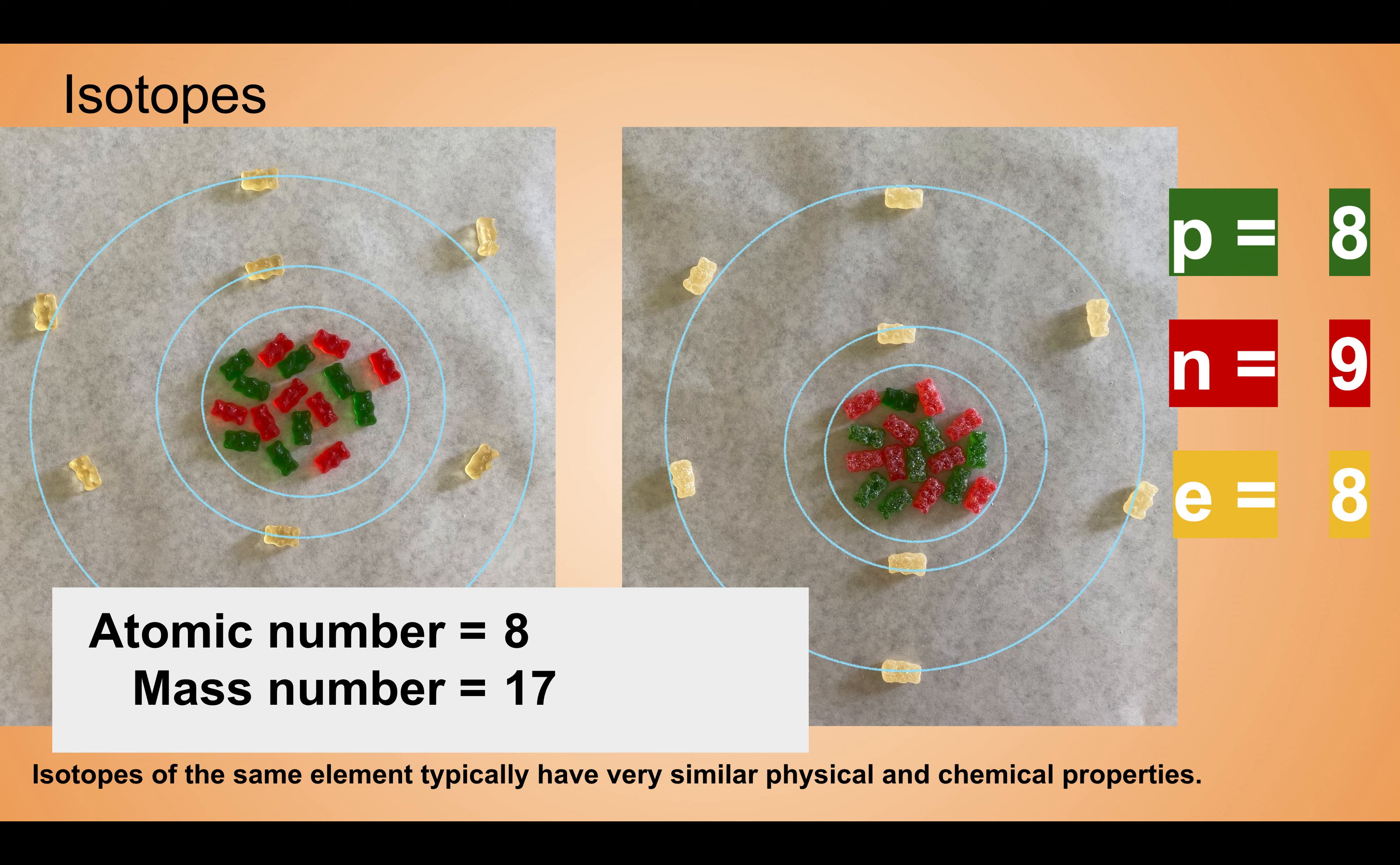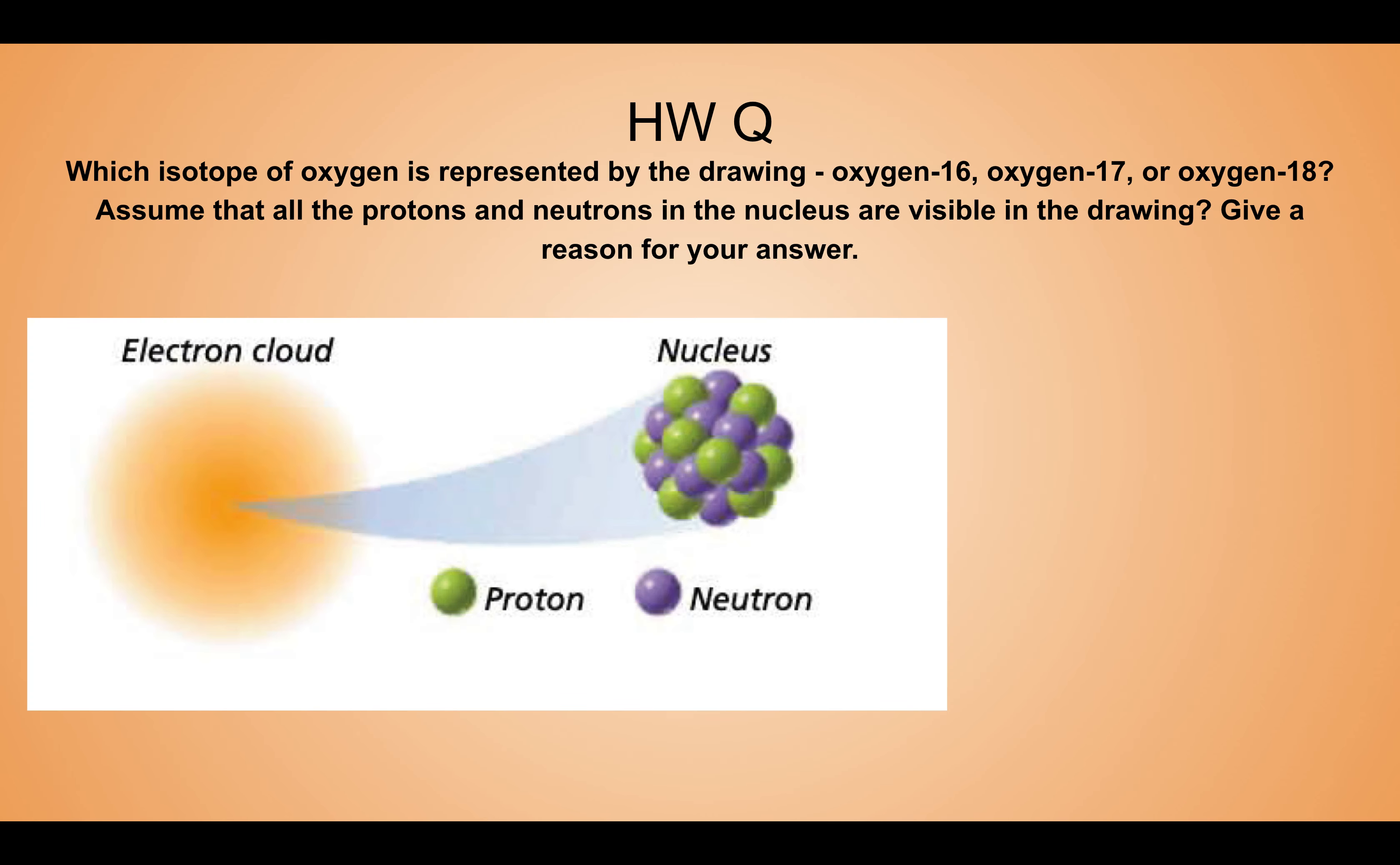Typically, isotopes of the same element have very similar physical and chemical properties, but sometimes they do change. Like I said, we're not really going to get into this too much, but if you have any questions let me know. I gave you guys this problem on the homework for this section and it definitely confused a lot of you. It's telling you to identify - is this oxygen-16, oxygen-17, or oxygen-18?